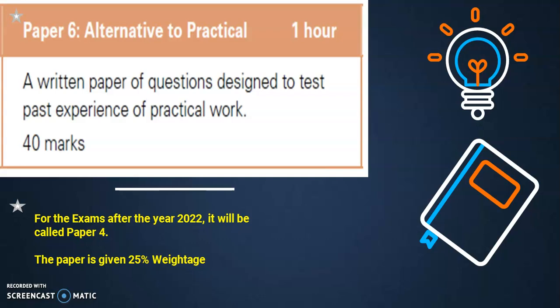This exam Paper 6 will be called Paper 4 after the year 2022. This paper is given 25% weightage, which means that if you score 40 out of 40 marks, you will get 25% weightage for this paper, just like Paper 1 and Paper 2 which is of 50% weightage.